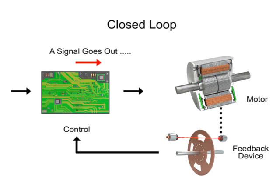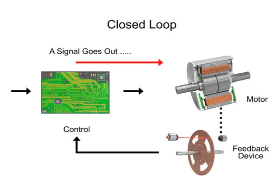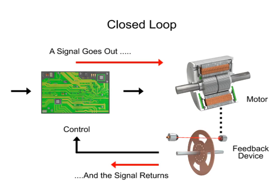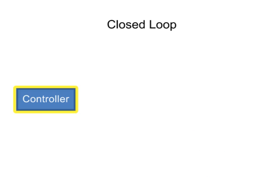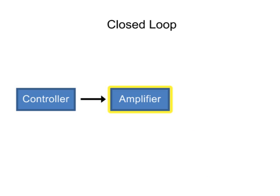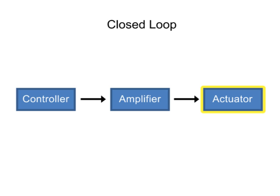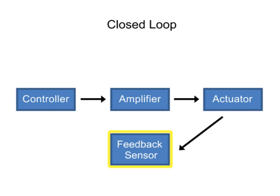Closed-loop systems, on the other hand, are designed to automatically maintain the desired output by comparing it with the actual condition. Feedback devices are used to control the outcome and are referred to as closed-loop.